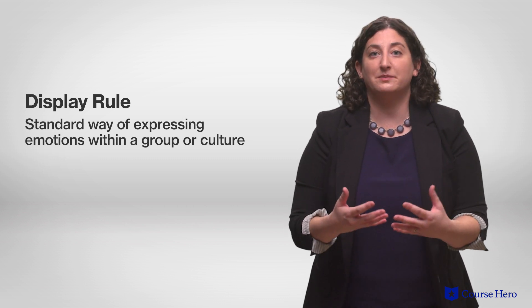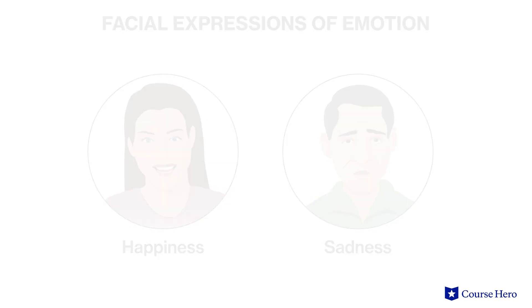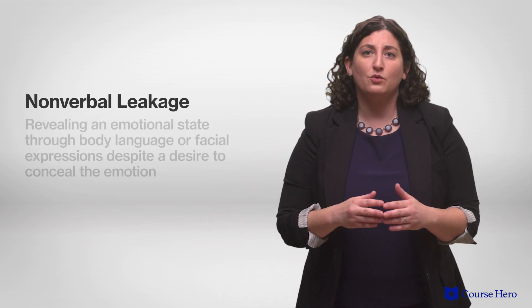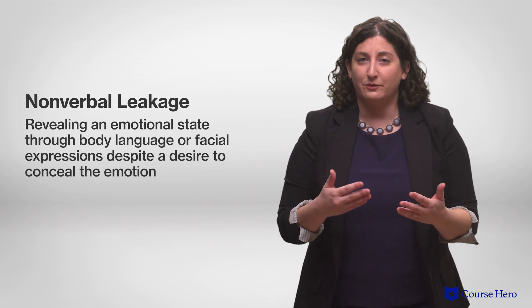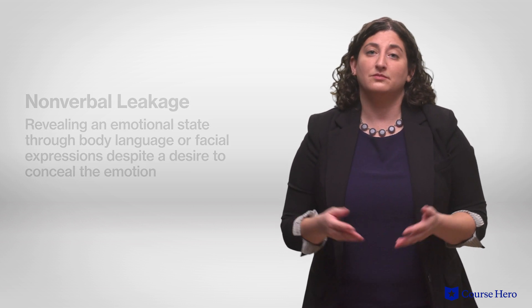It's extremely useful for us to be able to look at the faces of others around us and tell whether or not someone is happy or sad. But sometimes people experience emotions that they don't want to reveal to others. They might do their best to hide this, but they run the risk of non-verbal leakage — revealing an emotional state through body language or facial expression despite a desire to conceal it. For example, a person who discovers that a co-worker got the promotion they'd hoped to get may show a flash of jealousy or sadness when offering their congratulations.